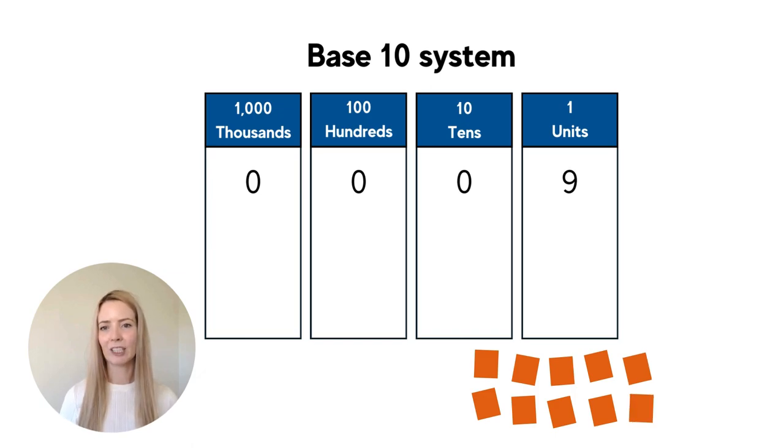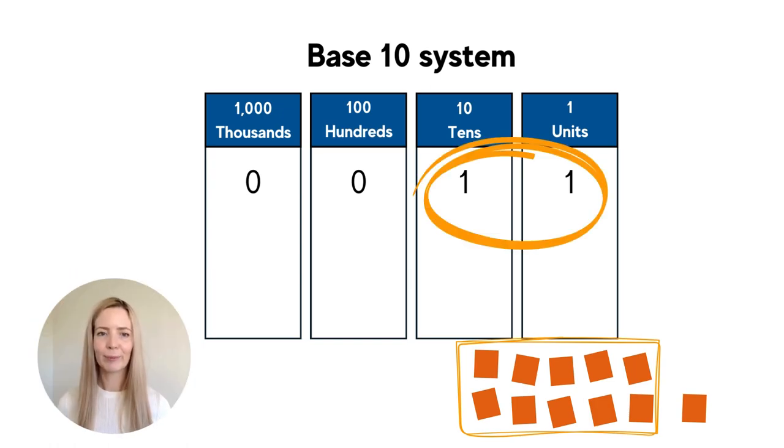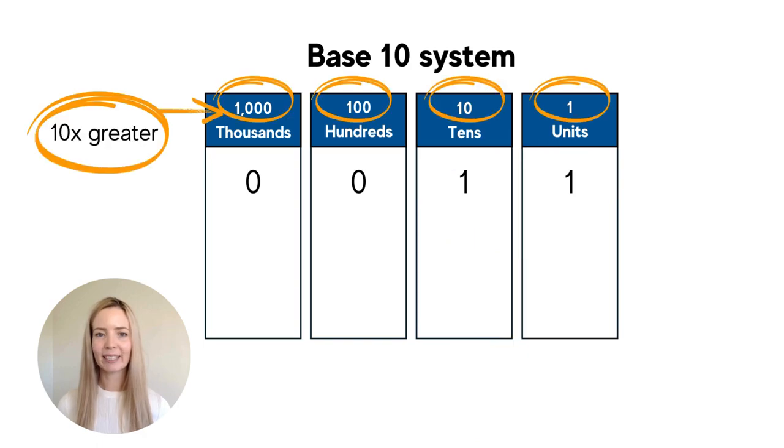A change occurs when I reach 10. Let's say we now have 10 items. I'm going to need to carry across because we have one lot of 10. Now, if I add one more item here, that's one lot of 10 and one spare. In our columns, we can see that it's the number 11. In base 10 systems, each column is 10 times greater than the previous. So we count by 1, 10, 100, 1000, and so on.